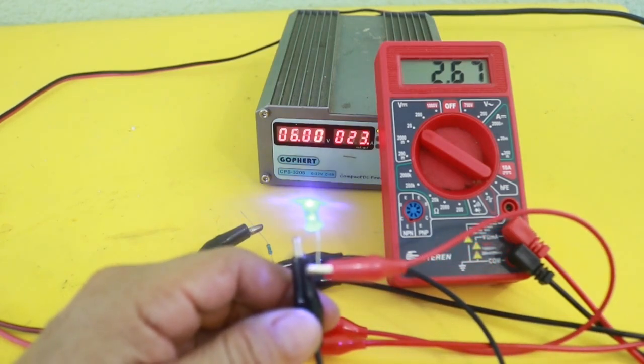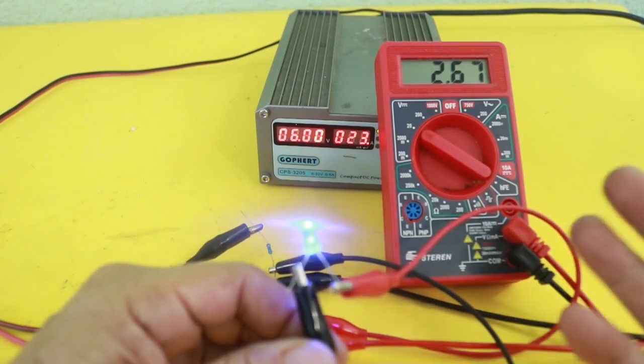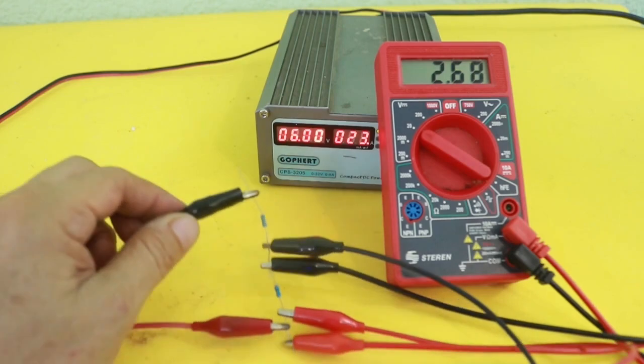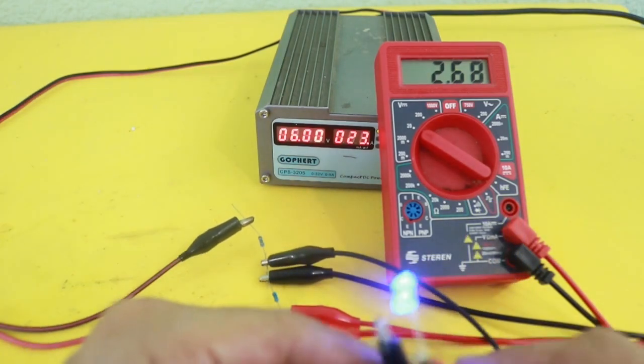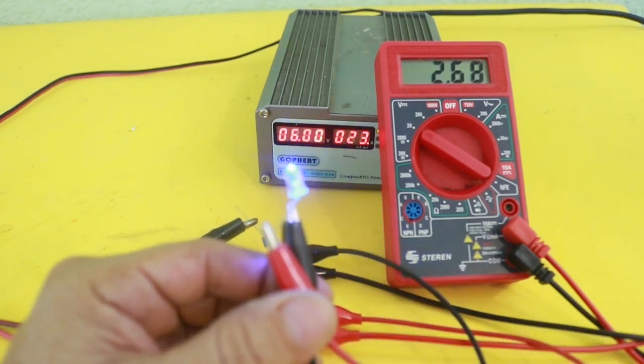So in order to solve this problem and have the same voltage that I calculated in the voltage divider, we can use our circuit with the operational amplifier as a voltage follower. Let's see.